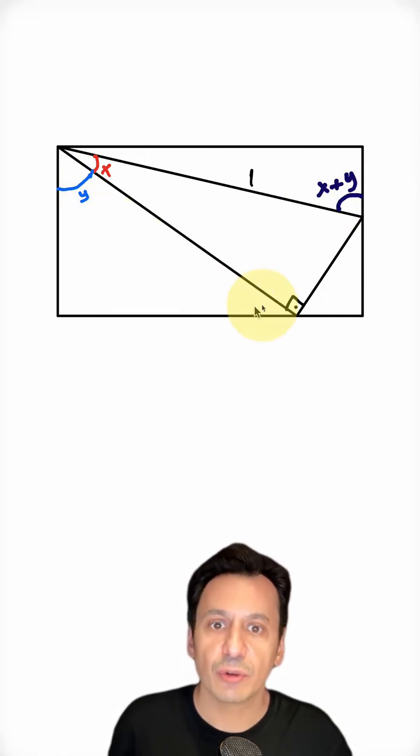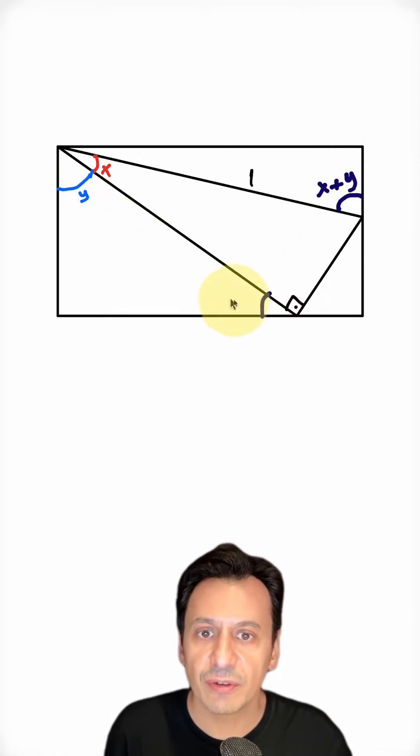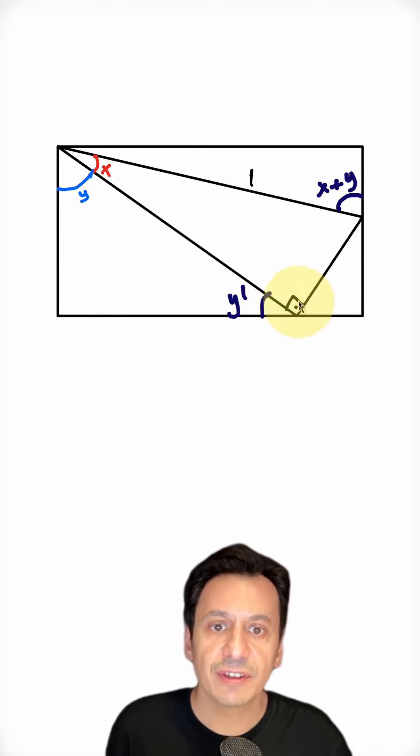I've labeled this angle as y. I can call the angle here the complement of y. Since this is 90 degrees and the total here is 180 degrees, the angle here will be its complement. That is y.